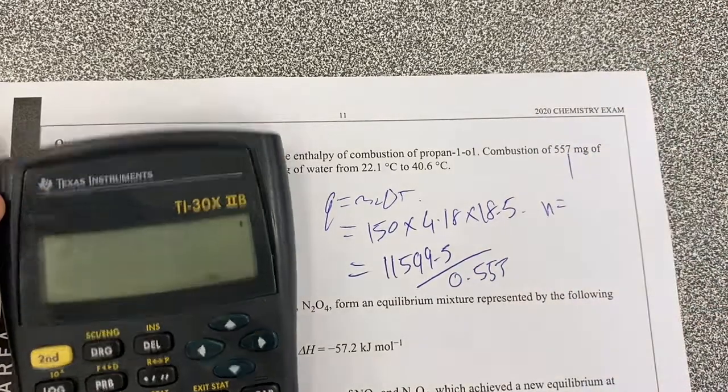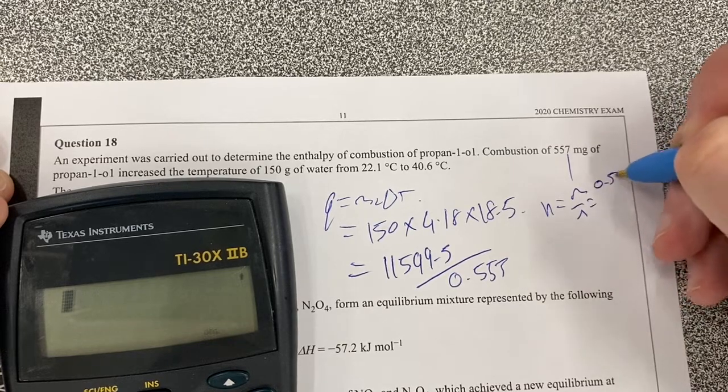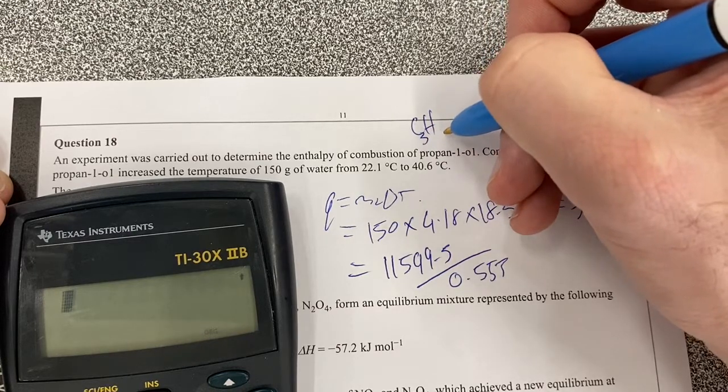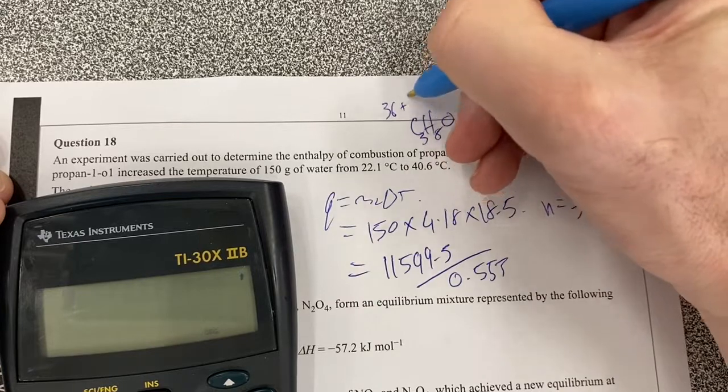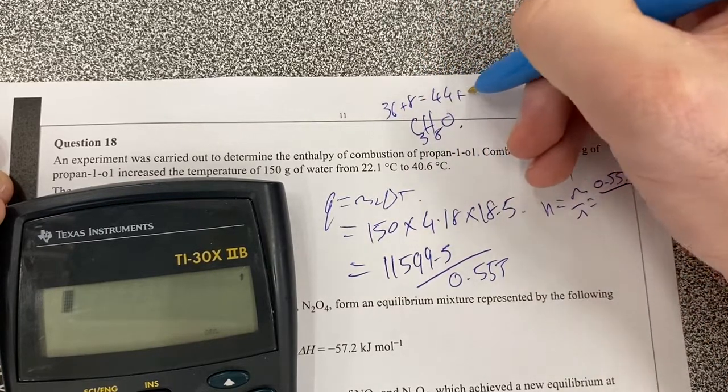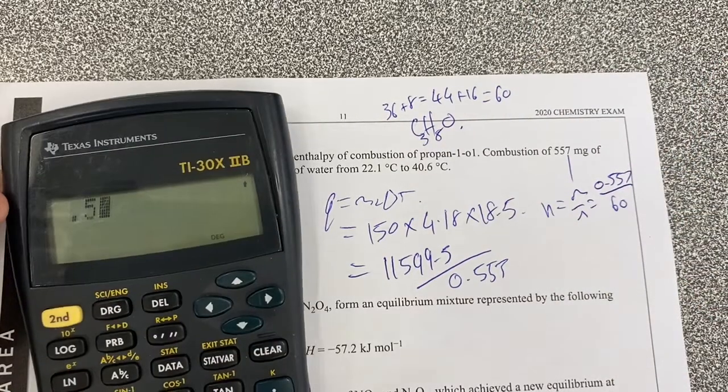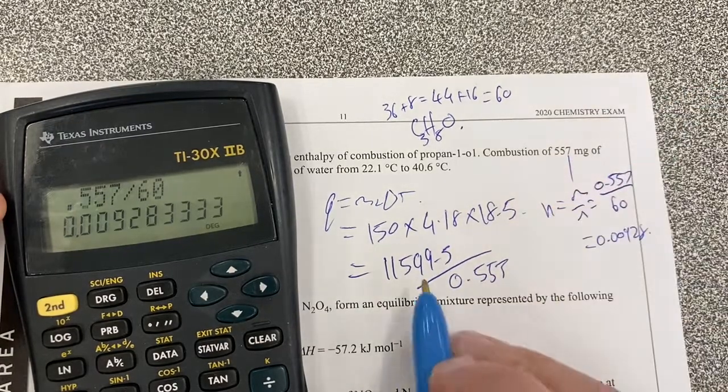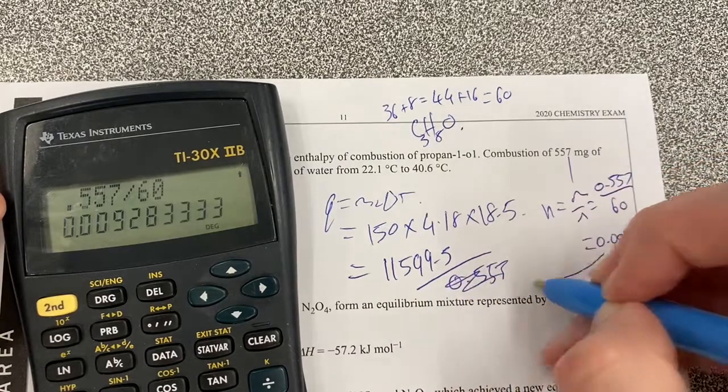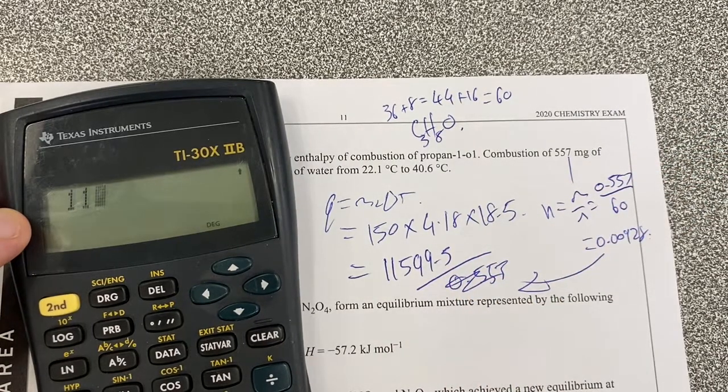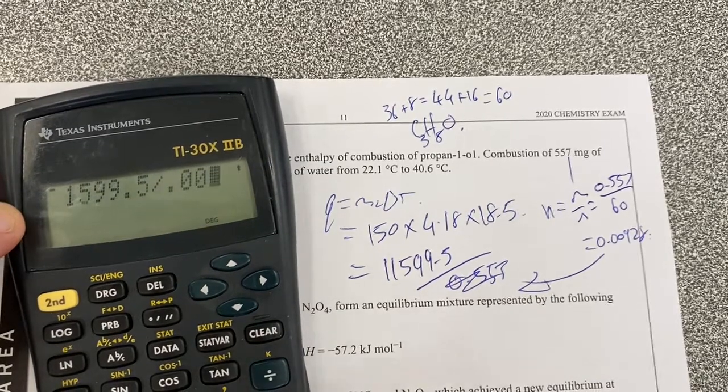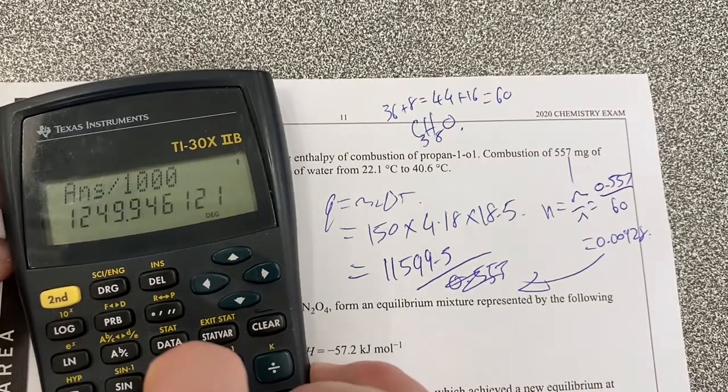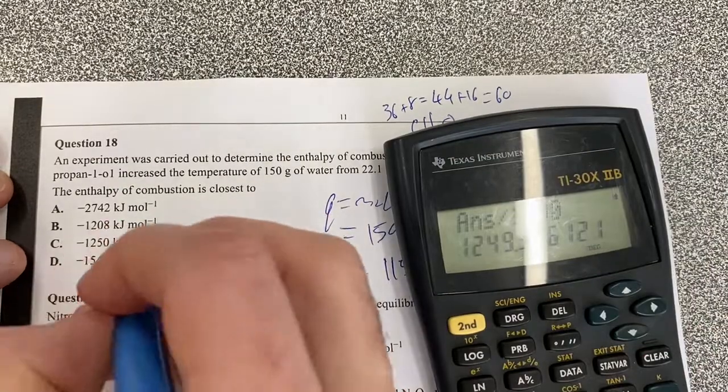So therefore, my moles is going to be mass over molar mass, so therefore it's going to be 0.557 divided by my molar mass of propanol. Propanol is C3H8O, so therefore it's 36 plus 8 is 44 plus 16 is 60, so it's that divided by 60. So 0.557 divided by 60 gives me 0.00928. I'll take this as being my number then, so 11599.5 divided by my 0.00928 equals that, which is then divided by 1000, and that is going to give me about C, should be my answer.